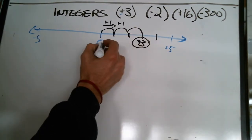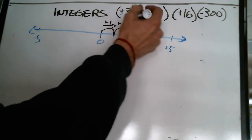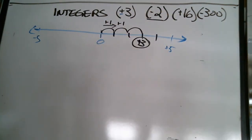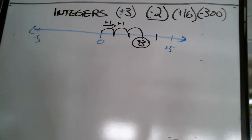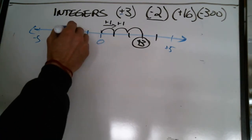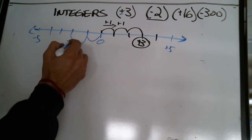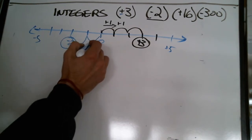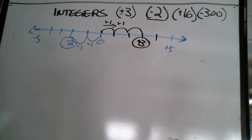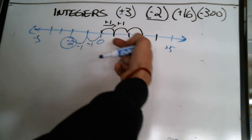Positive three would be to the right of zero, three steps. What about negative two — where do you think negative two is going to be? Negative goes to the left, so I'm going to go one, two steps to the left. This is negative one and negative two. So a positive step goes to the right, a negative step goes to the left.